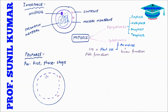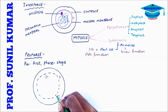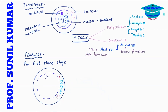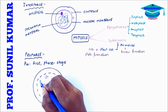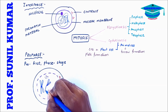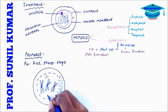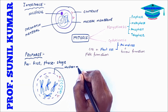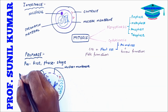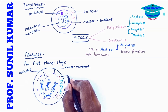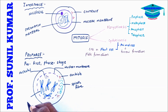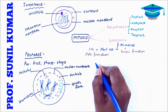In prophase, centrioles start moving towards opposite poles; they are surrounded by aster rays and joined by spindle fibers. The chromatin material condenses to form chromatids, which further condense to form chromosomes.